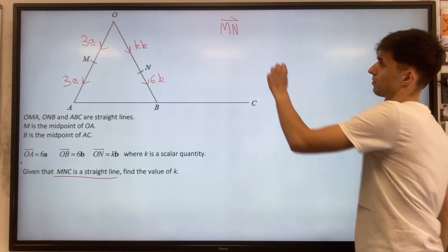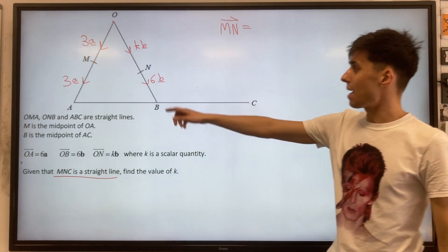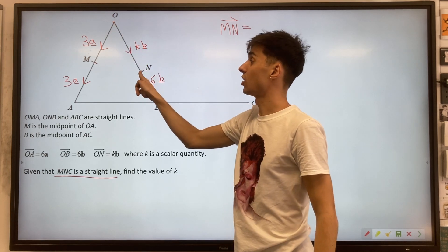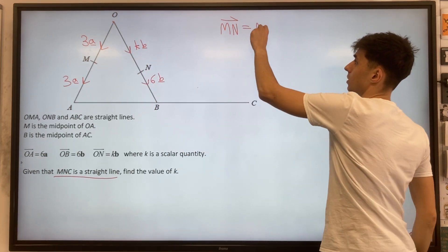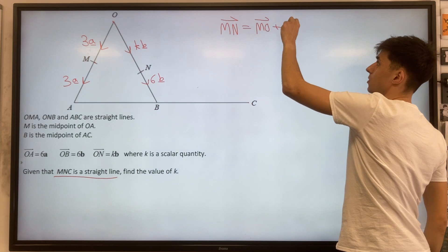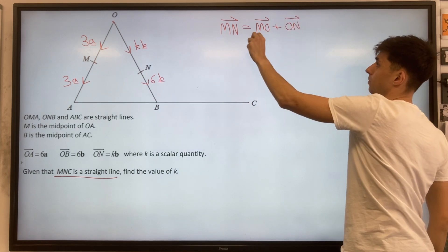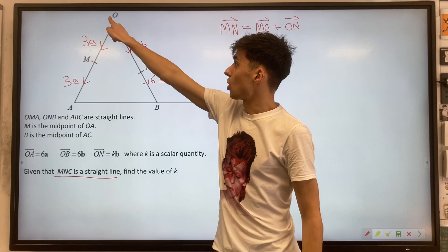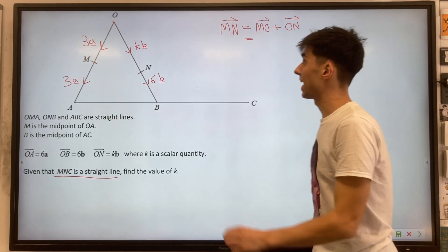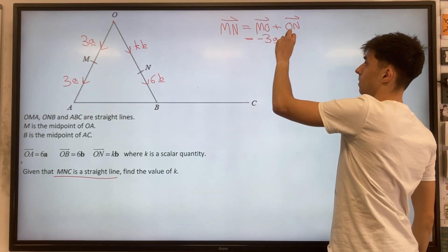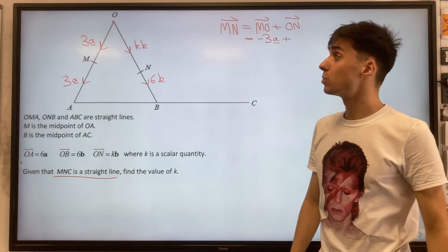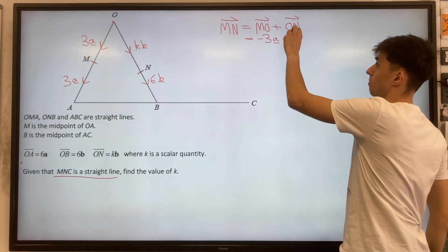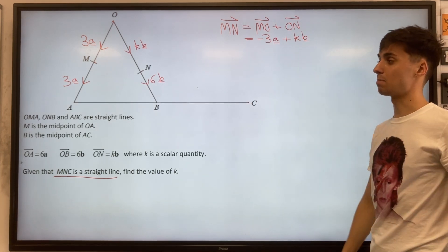Let's start off with MN then. To go M to N, you'll want to go from M to O and then O to N. So we're writing MO plus ON. This vector is really easy to find. MO is our minus 3a vector, and then going from O to N is our kb vector. So minus 3a plus kb.